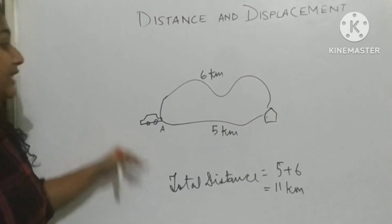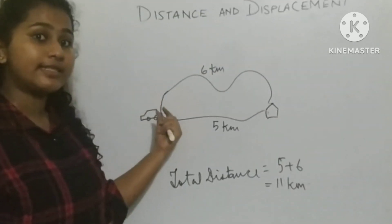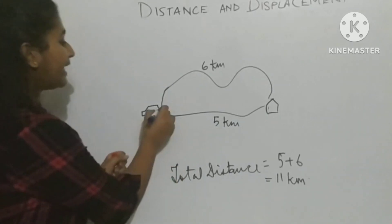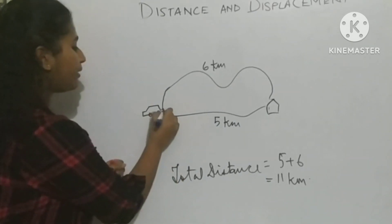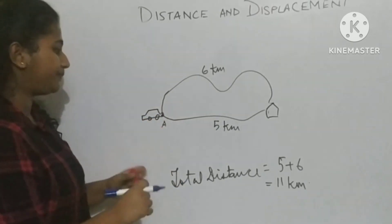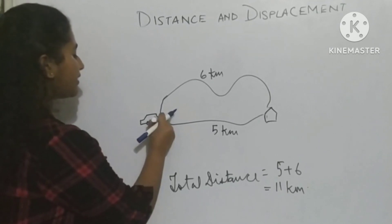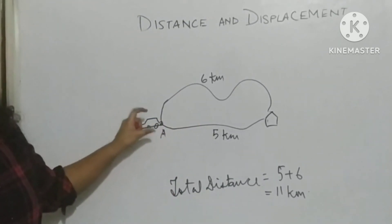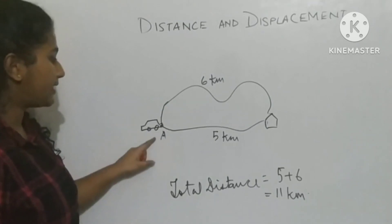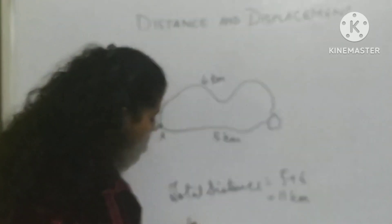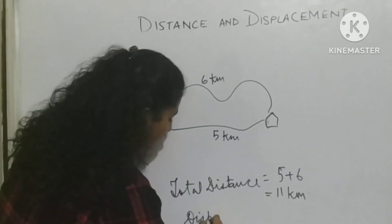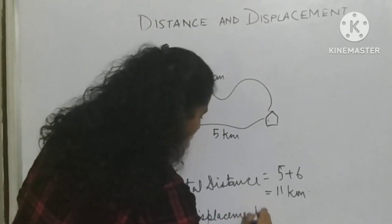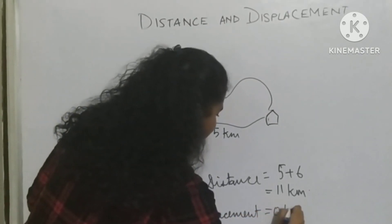Now what is the displacement? The displacement is the shortest distance from the initial to the final position. My initial and final positions are the same — both are A. So the total displacement is 0 kilometers.